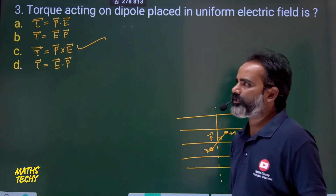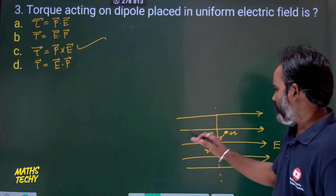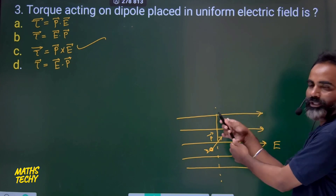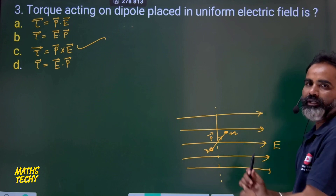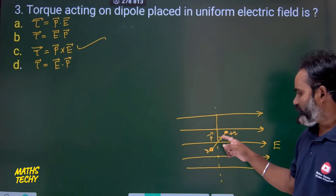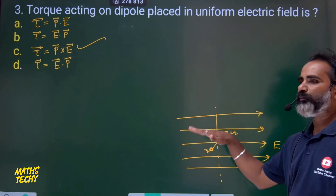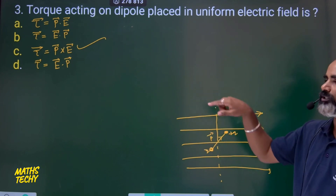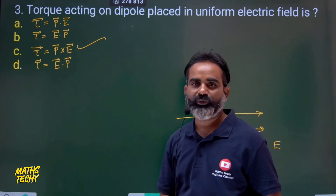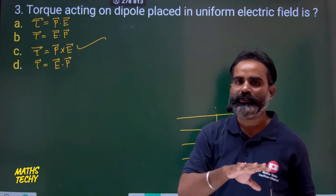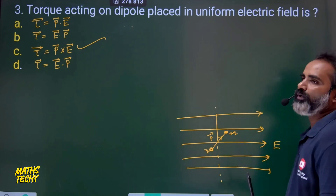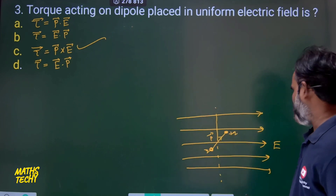In a uniform electric field the field lines are fixed, but the dipole can rotate. It makes some angle phi with the field. The torque is p cross E. Note that E cross p gives a negative value, so p cross E is the correct expression. The magnitude is pE sin theta. So the answer is the cross product of dipole moment and electric field, p × E.